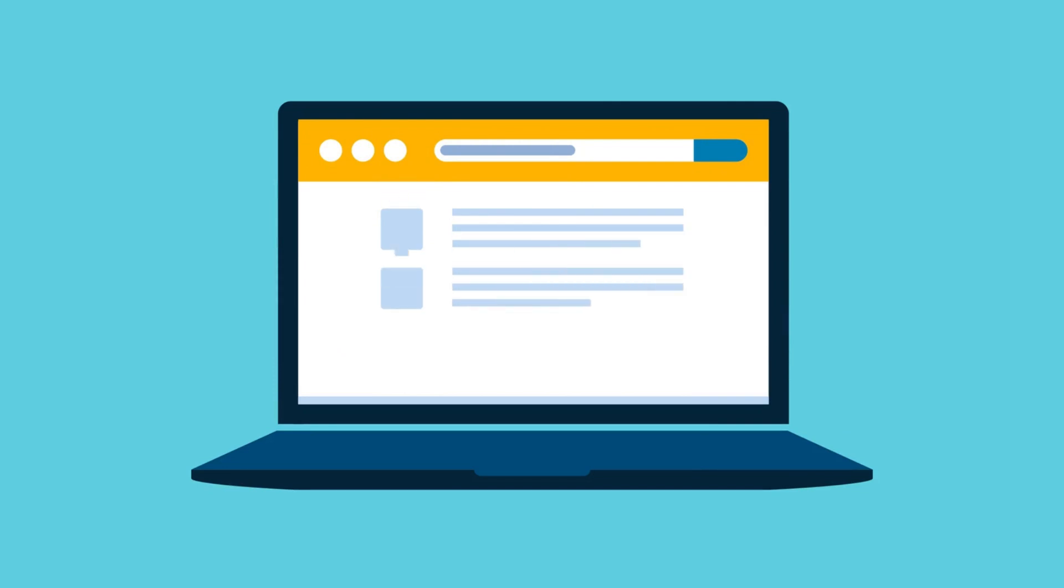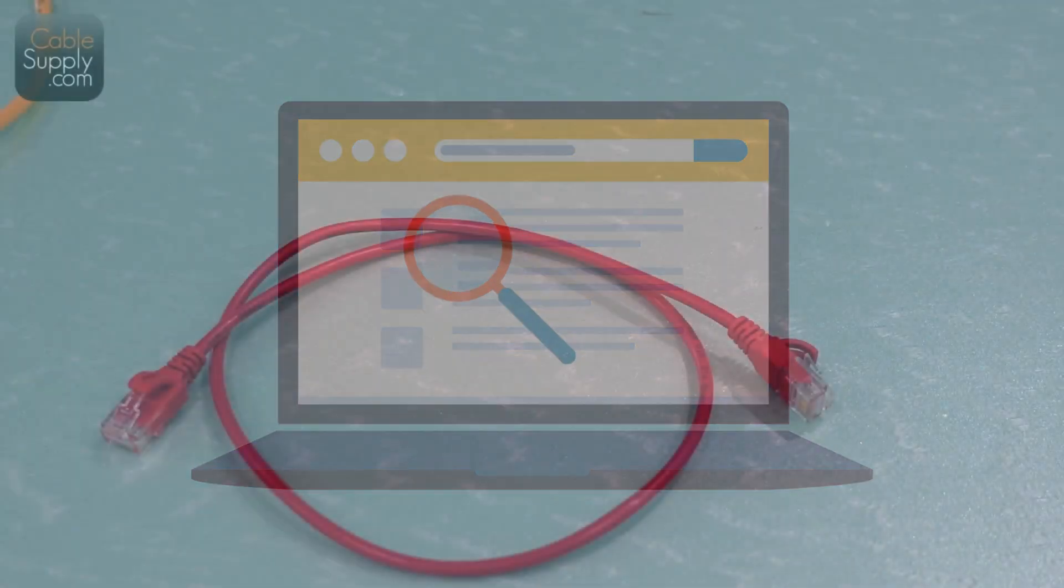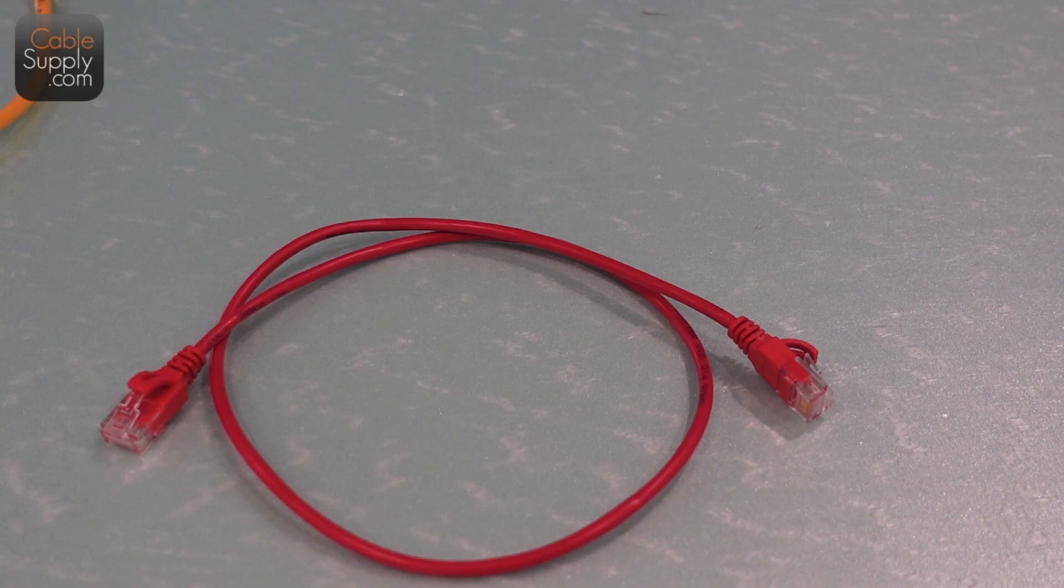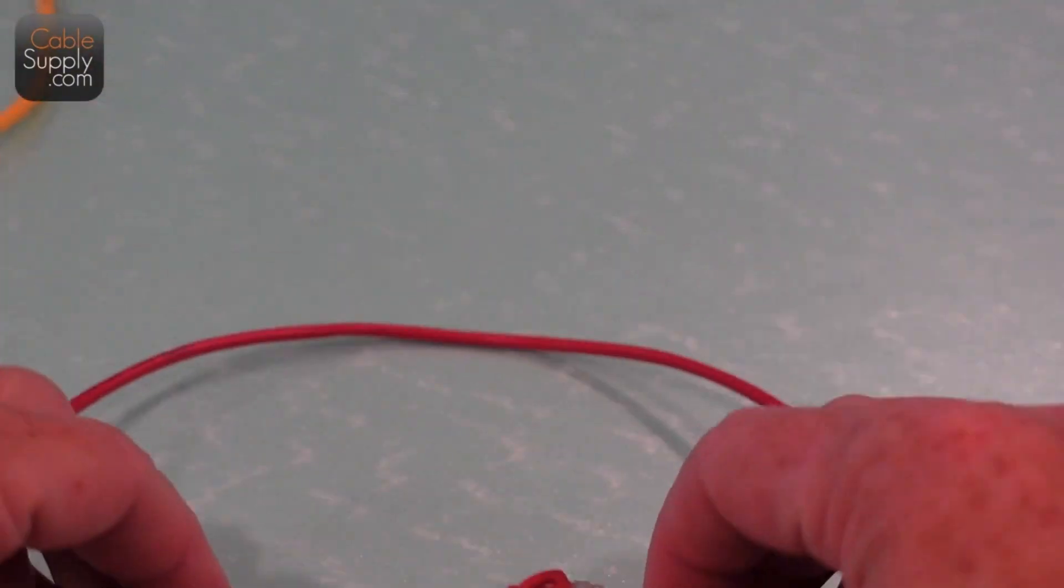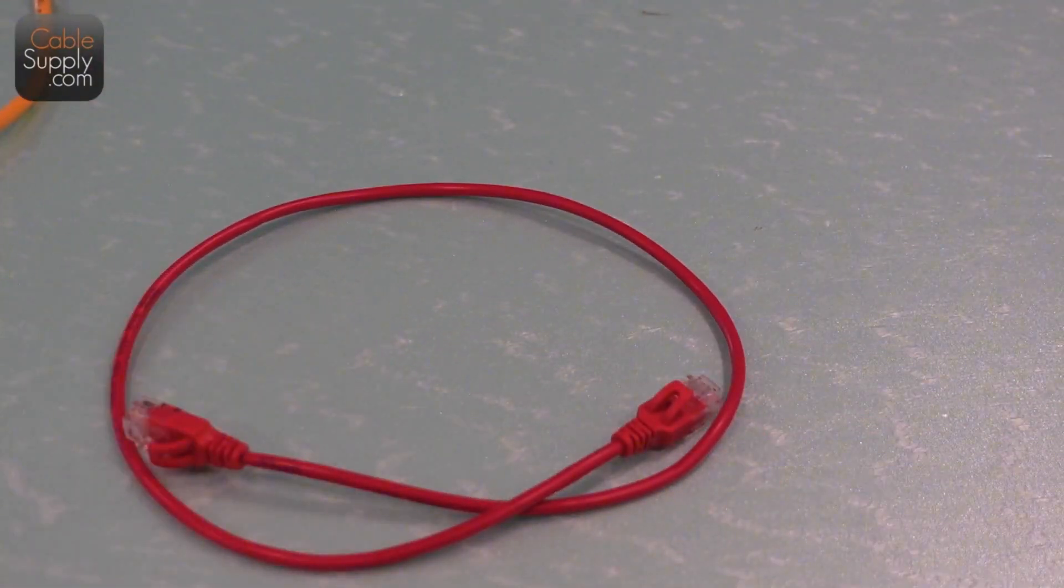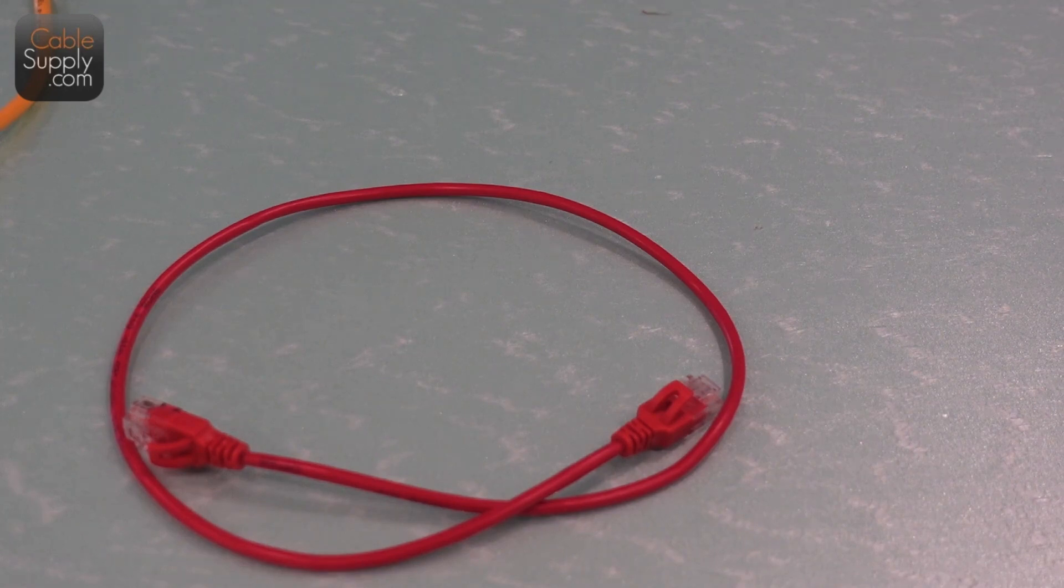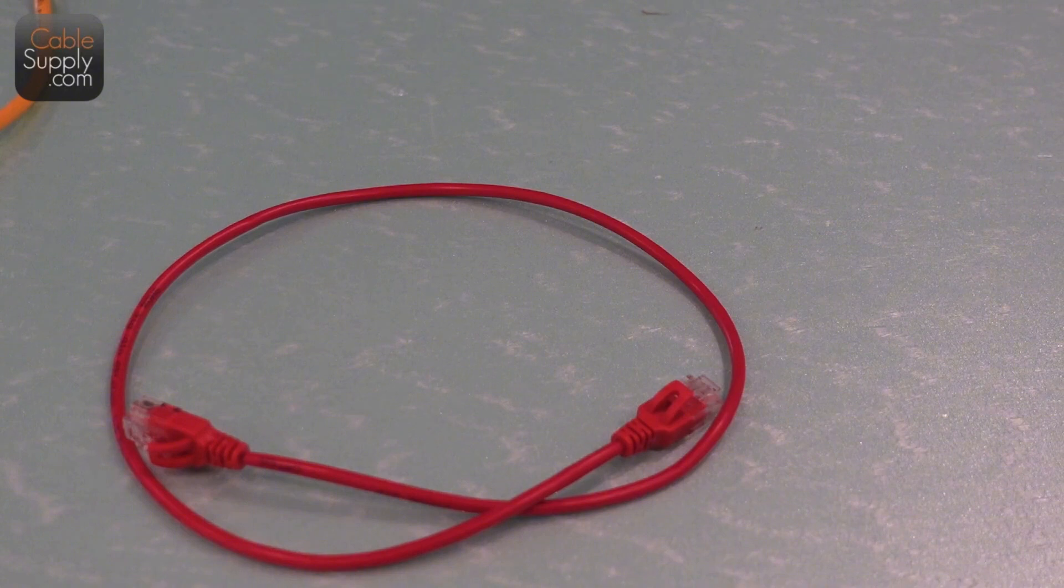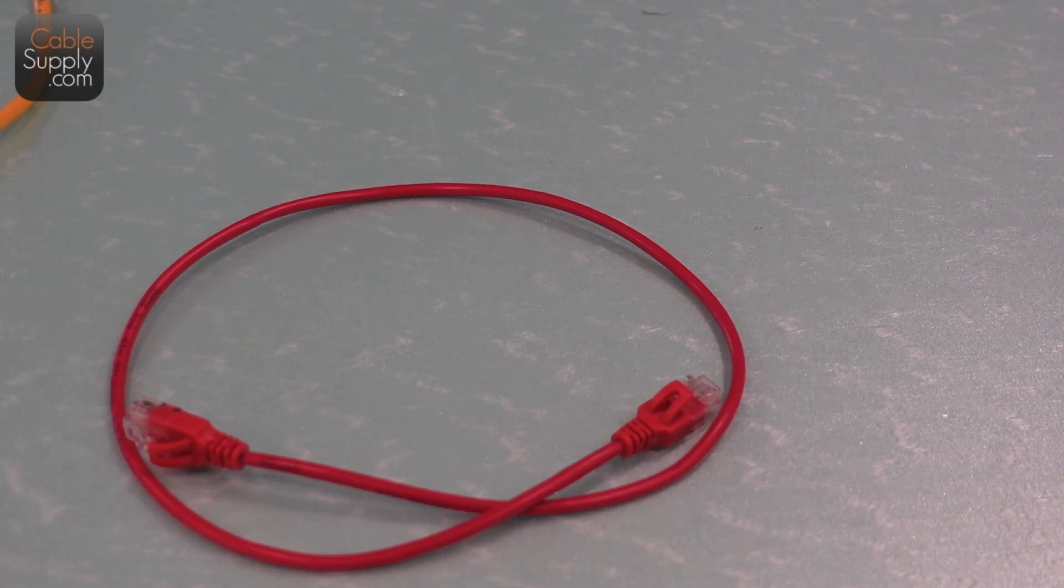I have people buying it in bundles. Go online, check them out, take a look at some of these. They come in all different colors and all different sizes. Primarily people are buying the one foot, the foot and a half. This is a foot and a half right here, this is Cat 6a. We're kind of moving away from Cat 5e and moving up to Cat 6, and now I'm getting more and more orders for 6a.